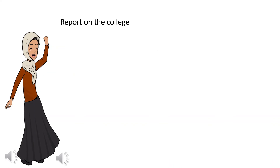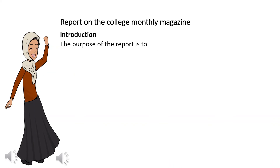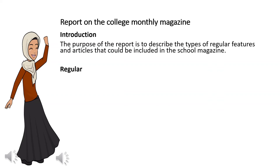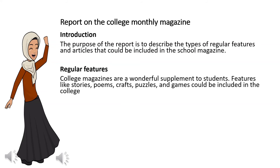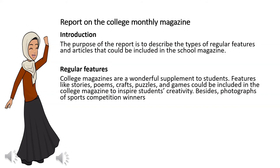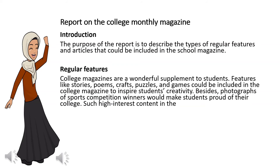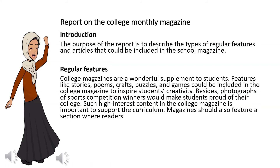Report on the College Monthly Magazine. Introduction: The purpose of the report is to describe the types of regular features and articles that could be included in the school magazine. Regular Features: College magazines are a wonderful supplement to students. Features like stories, poems, crafts, puzzles, and games could be included in the college magazine to inspire students' creativity. Besides, photographs of sports competition winners would make students proud of their college. Such high interest content in the college magazine is important to support the curriculum.